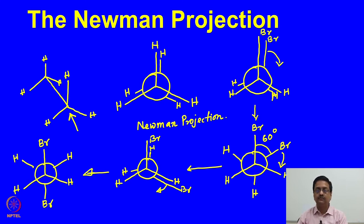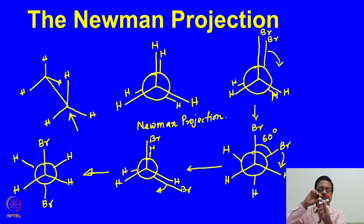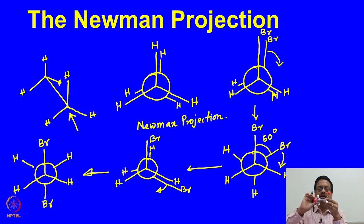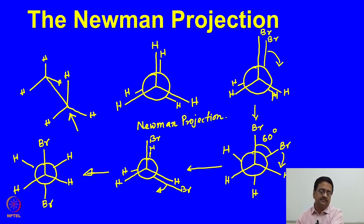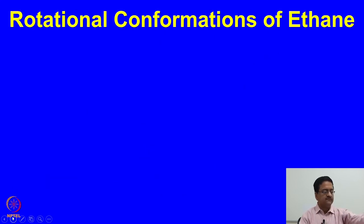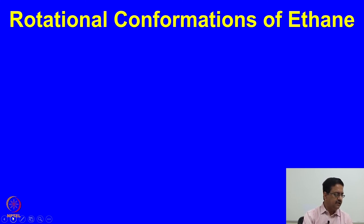What we have learnt is how to draw different conformations of a molecule using the Newman projection. When you rotate atoms about a bond, you get different conformations. These are different conformations of 1,2-dibromoethane, and they are interconvertible without breaking or making any bond — just by rotating the C-C bond. These are conformations, not configurations, and they are very important in various organic reactions.